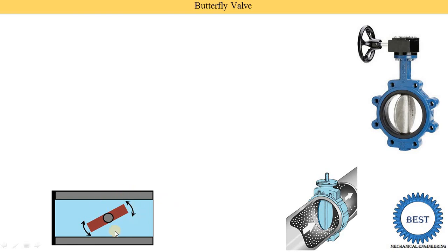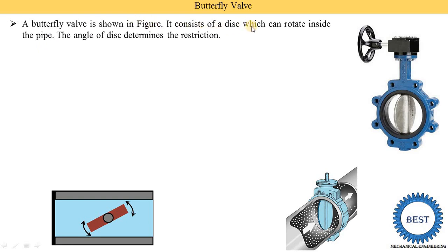Here you see this is a simple diagram of the butterfly valve. A butterfly valve is shown in figure. It consists of disc which can rotate inside the pipe. Here you see in this pipe, in between the pipe disc butterfly valve is put. When we rotate the disc, flow is controlled.